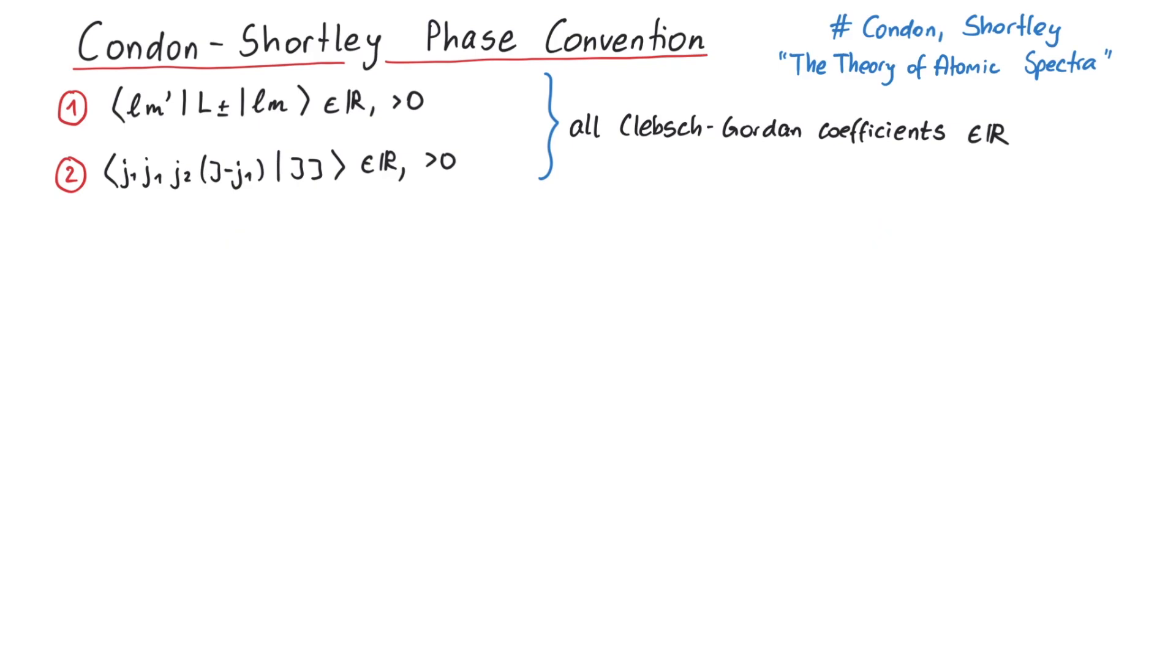Now let's consider the second statement of the Condon-Shortley phase convention. To see why this is useful, we will quickly derive a recursion relation of Clebsch-Gordan coefficients. The idea is that if we can calculate all other Clebsch-Gordan coefficients by using this single real coefficient, we will be able to show that all other coefficients are real numbers as well.